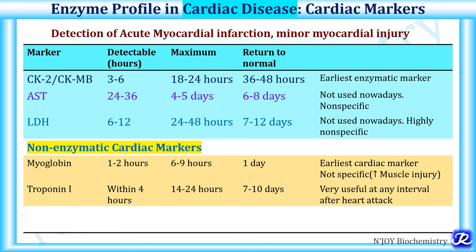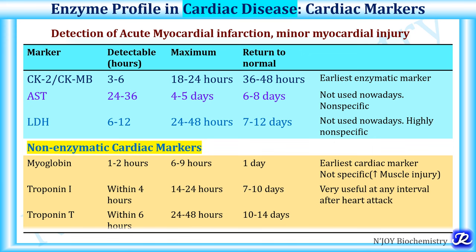Troponin I is raised within 4 hours of myocardial injury, reaches its maximum by 14-24 hours, and returns to normal by 7-10 days. It is very useful at any interval after a heart attack and is routinely used for diagnosis of myocardial infarction. Troponin T rises within 6 hours, reaches maximum by 24-48 hours, and returns to normal by 10-14 days. The enzymatic markers are CK-MB, AST, and LDH, but AST and LDH are not used nowadays as they are non-specific.